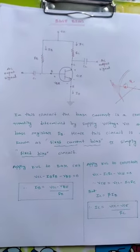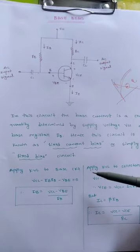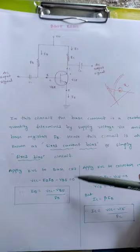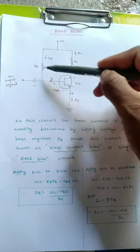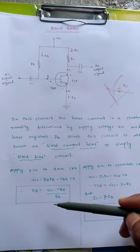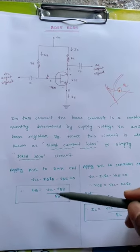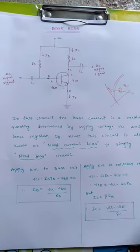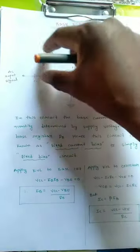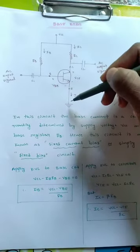Now applying KVL to the base circuit: VCC minus IB into RB minus VBE equals zero. Therefore, IB equals VCC minus VBE divided by RB.